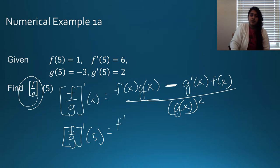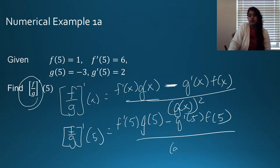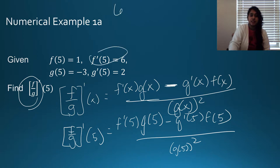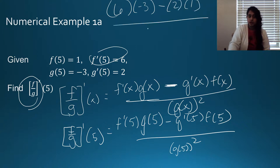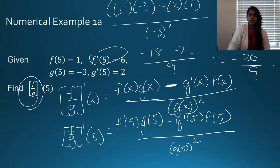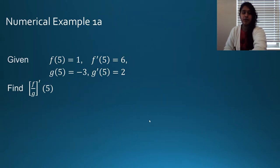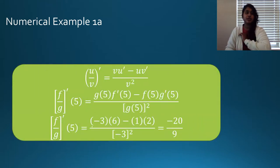That becomes f prime of 5 times g of 5, minus g prime of 5 times f of 5, all over g of 5 squared. Plugging in: 6 times negative 3, minus 2 times 1, all over negative 3 squared. So that becomes negative 18 minus 2 over 9, which gives us negative 20 over 9 as our end answer.